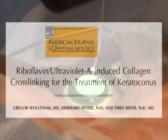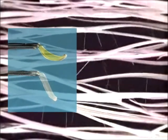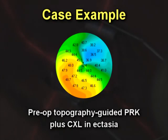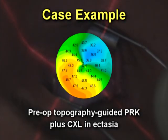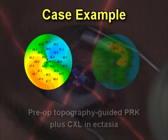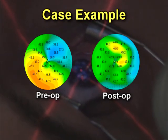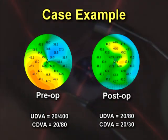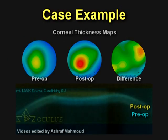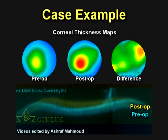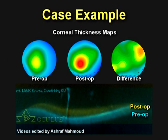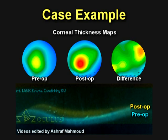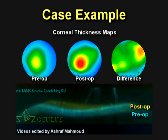Studies involving corneal collagen crosslinking procedures provide evidence of increasing stiffness after the procedure. This case had custom PRK followed by corneal crosslinking. Note the improved topography with regularization and improvement of uncorrected and best corrected vision. Despite thinning caused by the ablation procedure, the deformation characteristics suggest higher stability after the surgery.